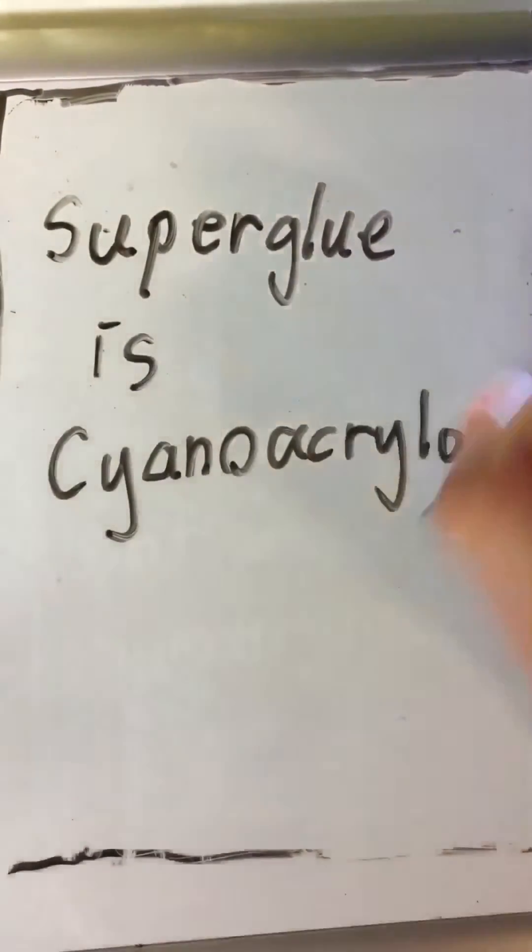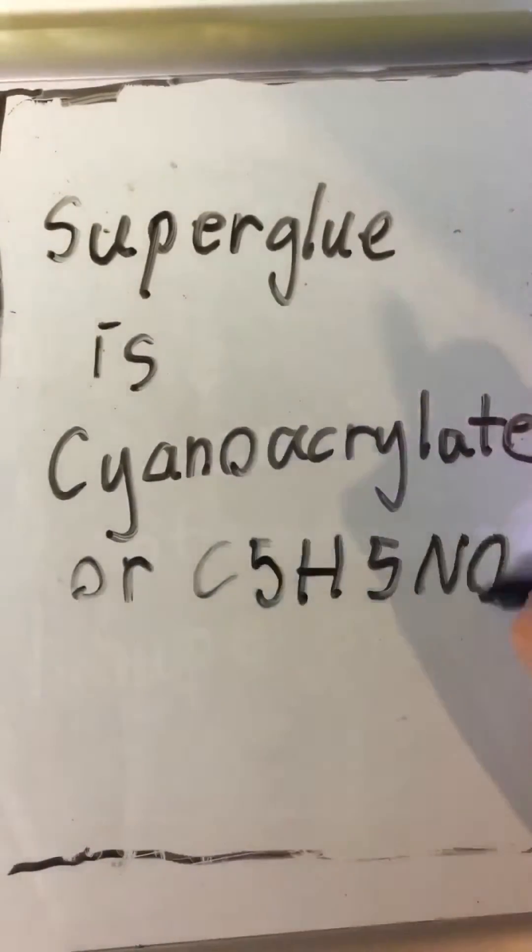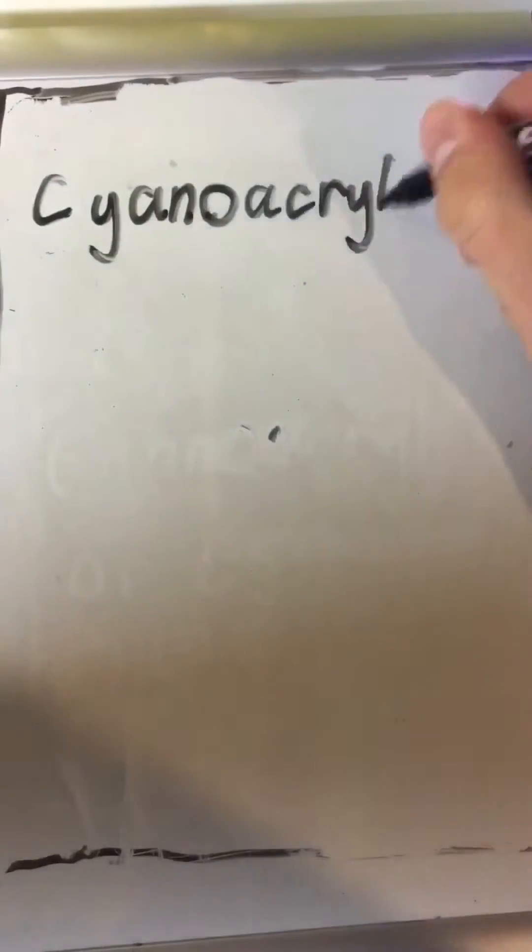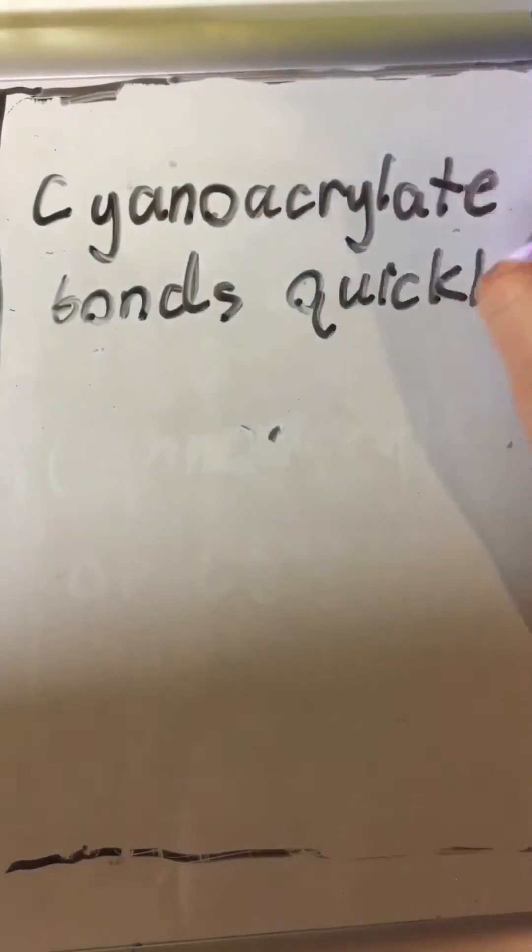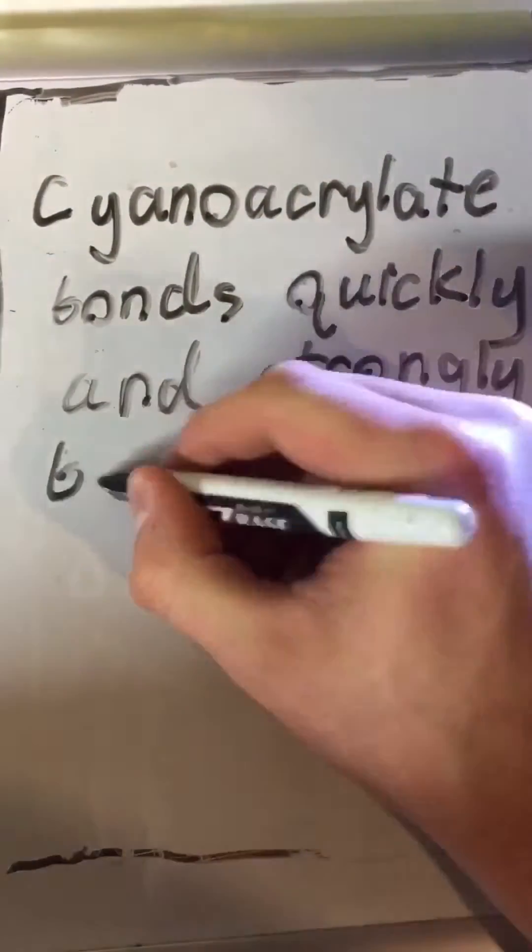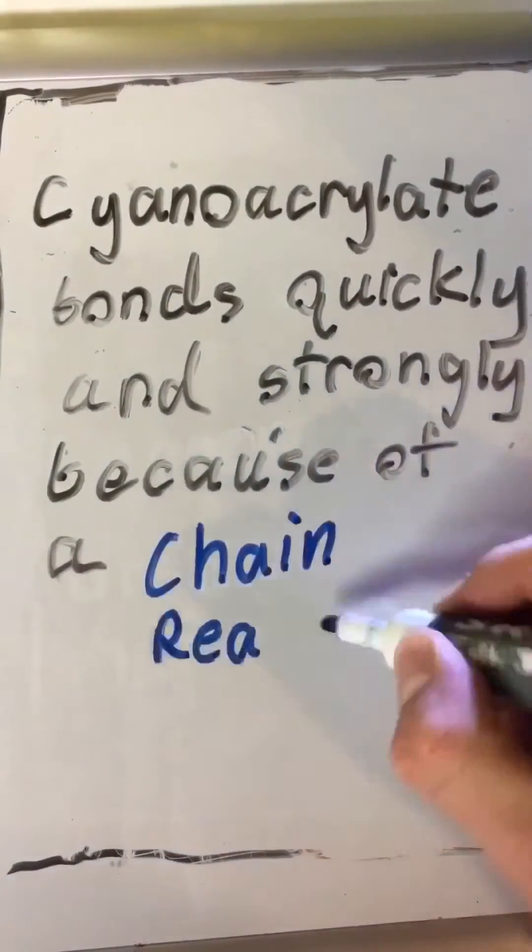Super glue is cyanoacrylate or C5H5NO2 written out. Cyanoacrylate bonds quickly and strongly because of a chain reaction, a chemical chain reaction.